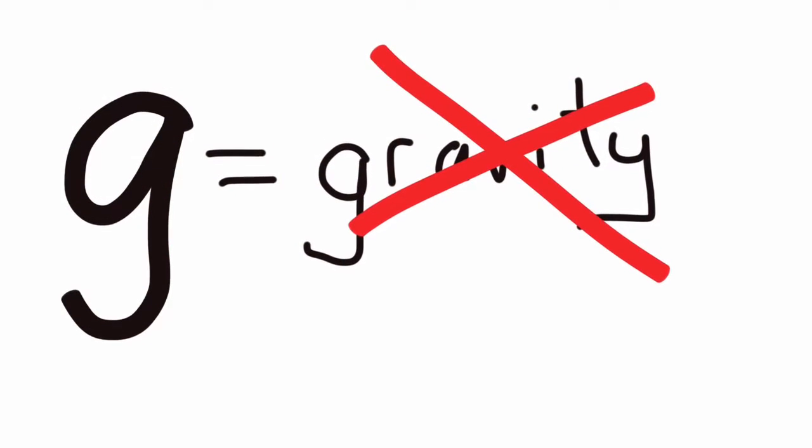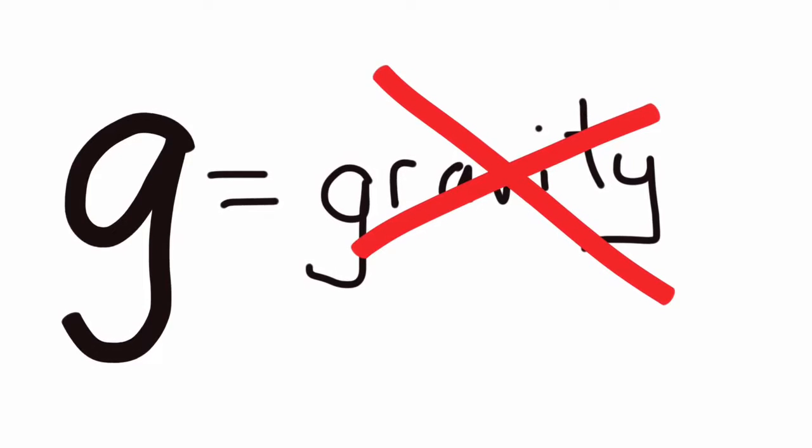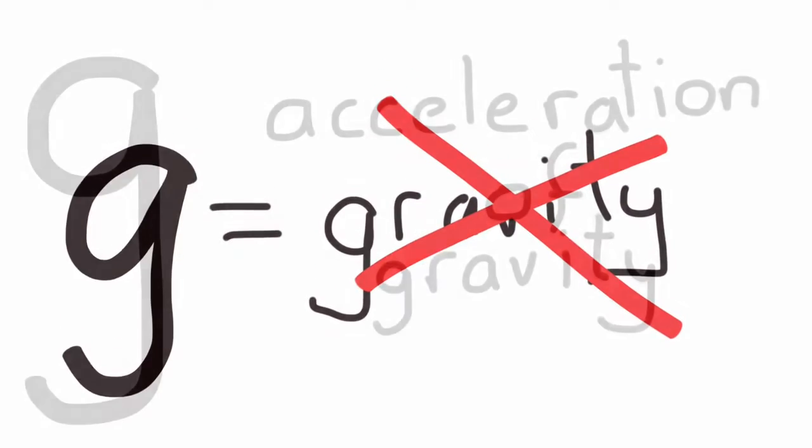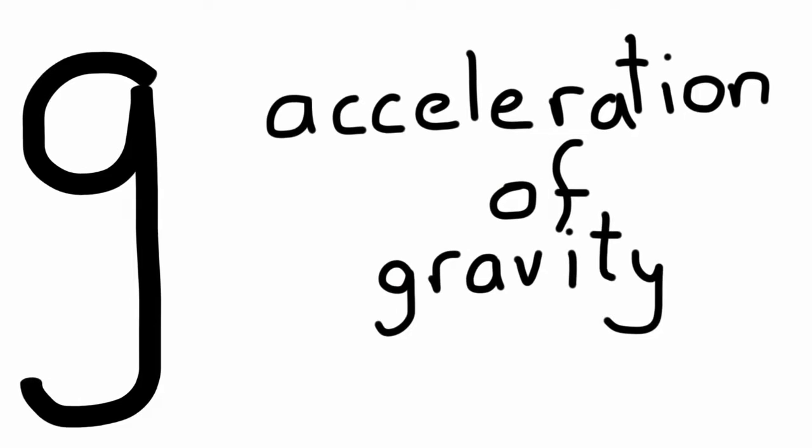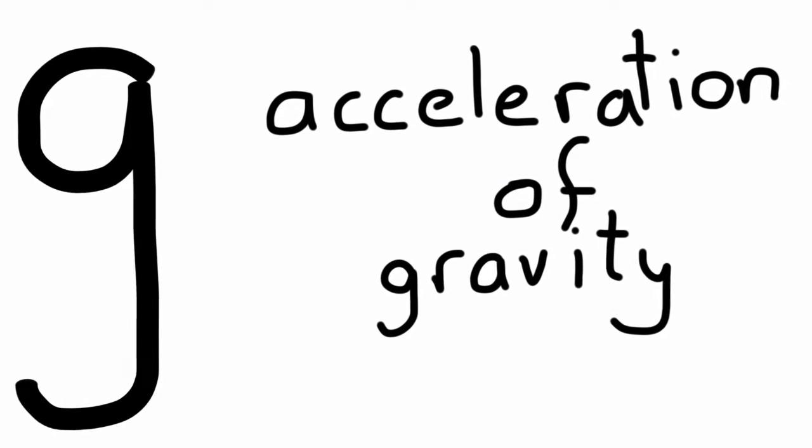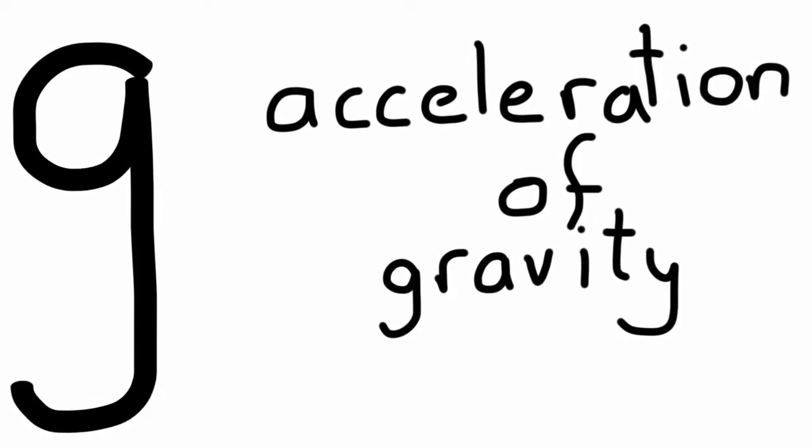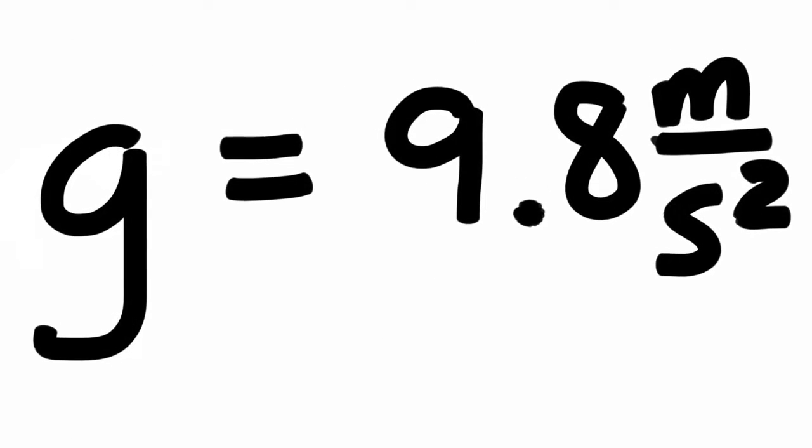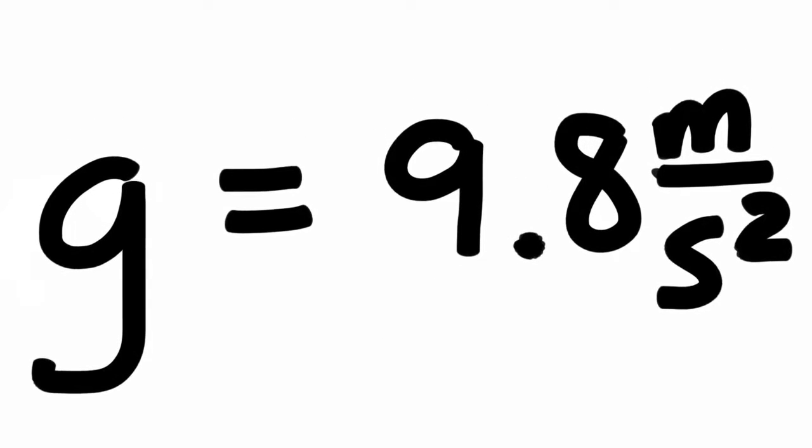Well, g, although it feels like it, g is not gravity. The classical interpretation of g that we have seen again and again is g is the acceleration of gravity, the acceleration of an object in the absence of friction near the surface of the Earth. The value here is 9.8 meters per second squared.